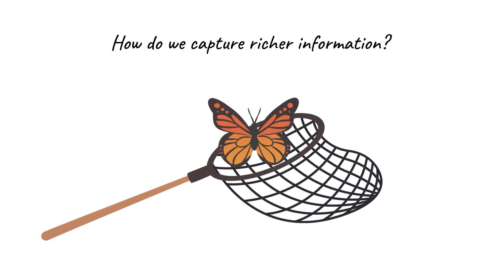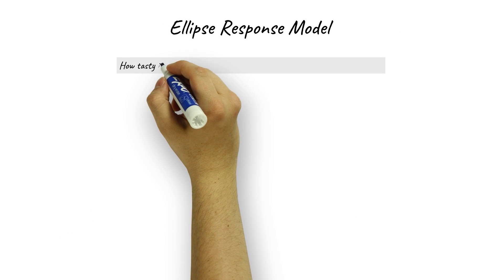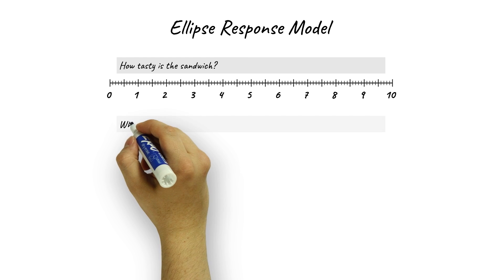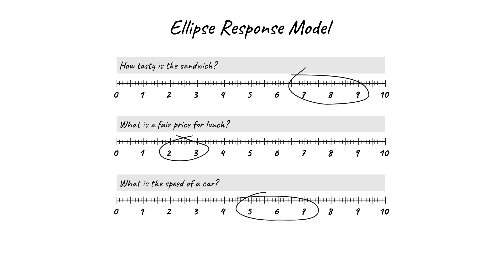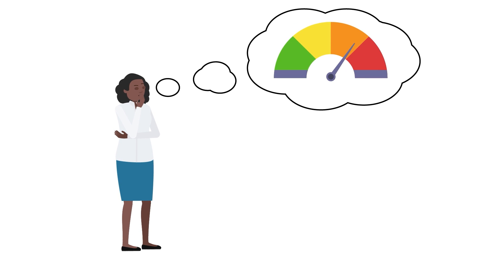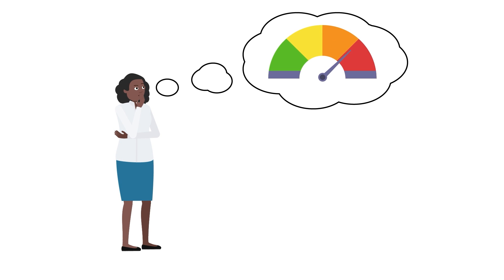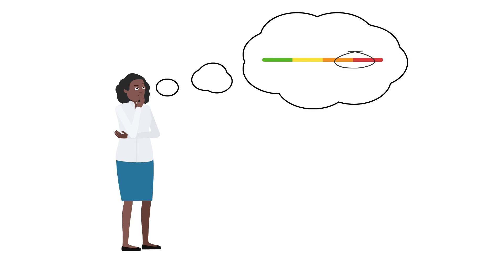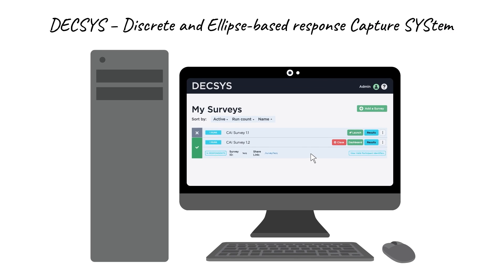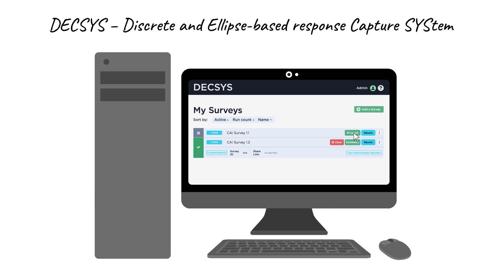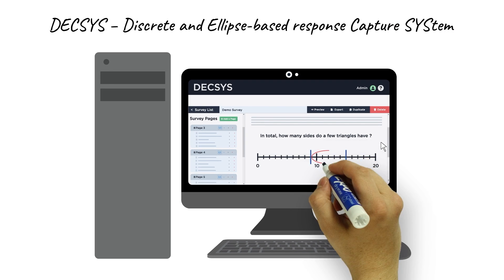So how do we capture richer information? Lucid has created easy-to-use ways to capture a rich, quantitative view of responses using interval responses in the form of ellipses. These can represent response range, vagueness and uncertainty. This approach is quick and intuitive. We've developed open-source software allowing anyone to build a survey and capture interval-valued and other responses.